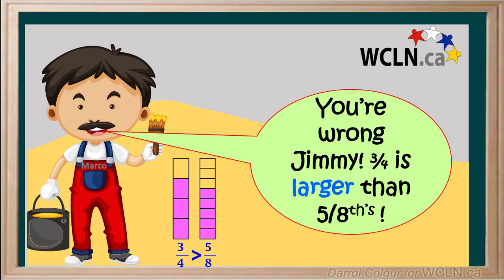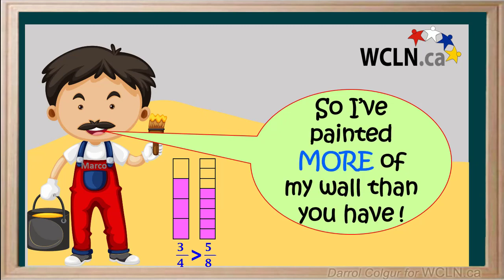Marco has painted 3 quarters of his wall, and as he points out, 3 quarters is larger than 5 eighths. So Marco has painted more of his wall than Jimmy has.